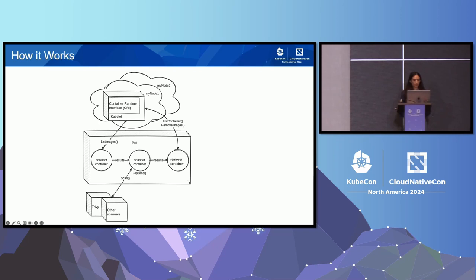Our pod is represented in the middle here, and each container is referencing those questions that we saw before. The collector container is getting that list of images using the container runtime interface, and it's passing that on to the scanner container which is scanning those images for CVEs — using Trivy by default, but that's pluggable with different scanners. The results are then passed to the remover container which performs the removal again using the container runtime interface.